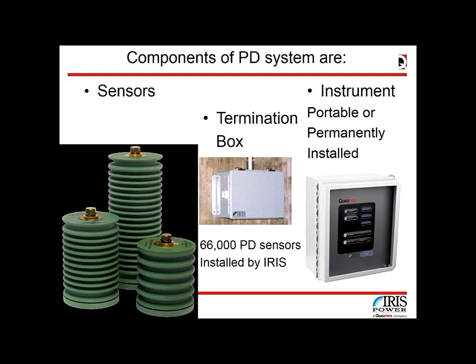To start monitoring, sensors must be installed. Sensors come in different shapes and sizes, but it is important they are designed specifically for PD data collection — multi-purpose sensors do not do an excellent job. Purpose-designed PD sensors are better than general-purpose alternatives. Once permanently installed inside the machine, there will be a connection termination box between sensor and instrument, which can be portable or permanently installed.